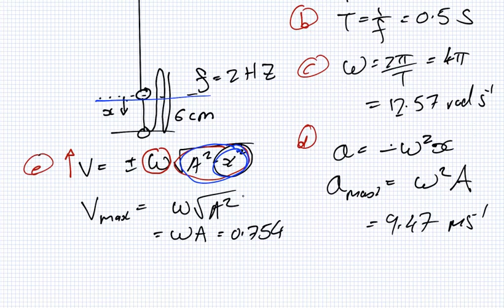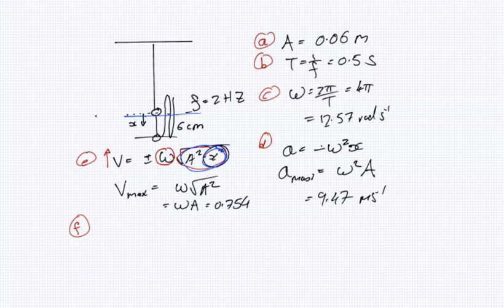Alright, part F now. How fast is the bob moving after one second? So what we'll do is we'll call this direction plus and this minus.